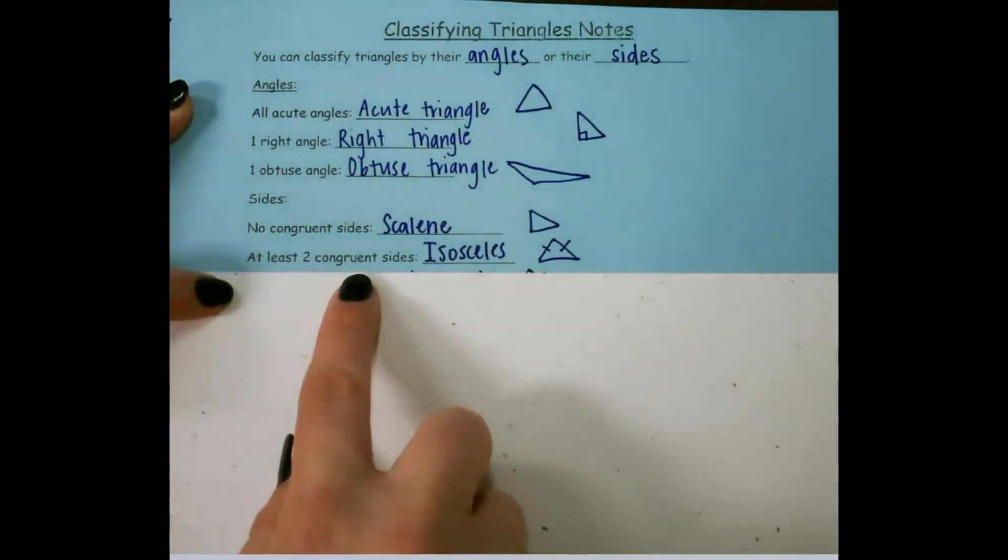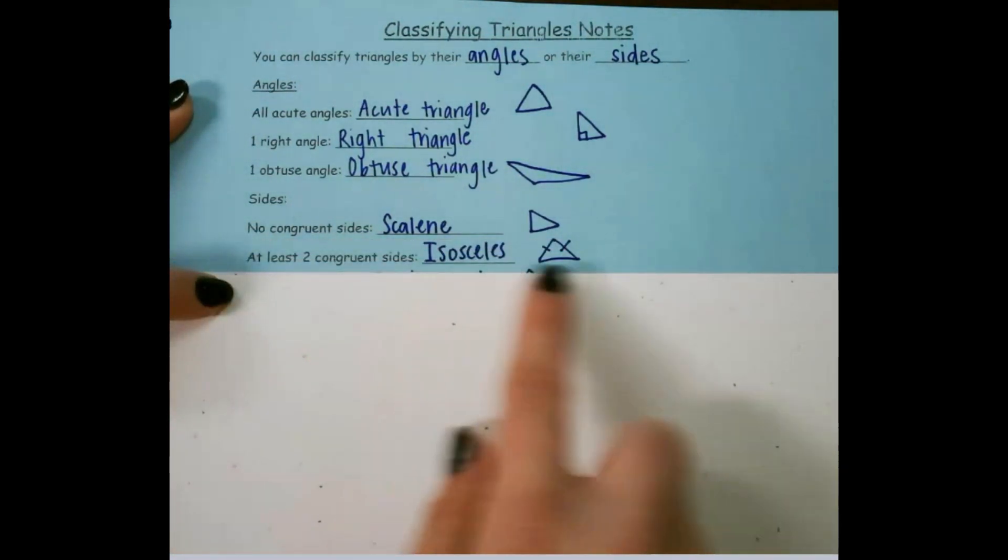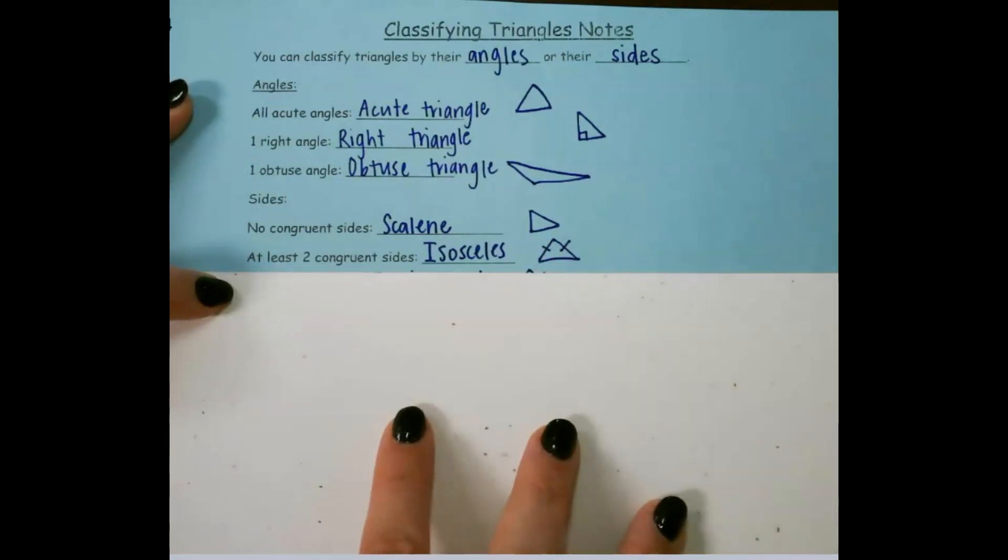If it has at least two congruent sides, it's isosceles, and we indicate that by these lines. That means that those two sides are equivalent or congruent.